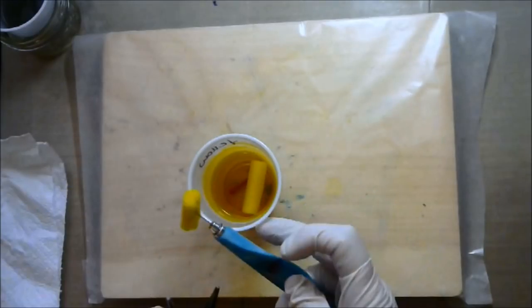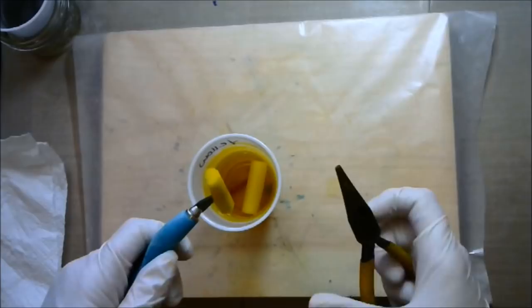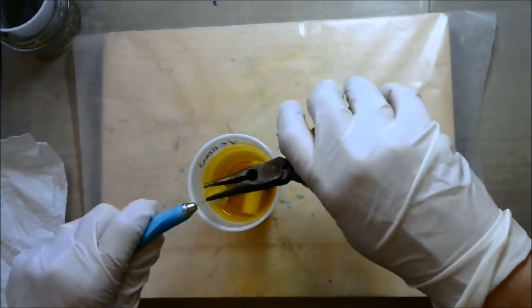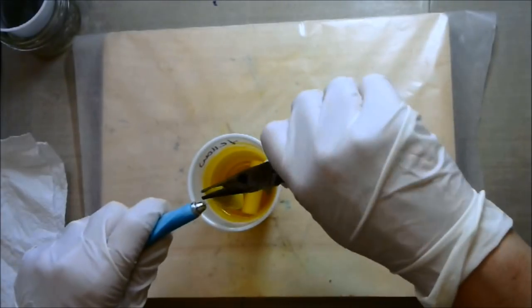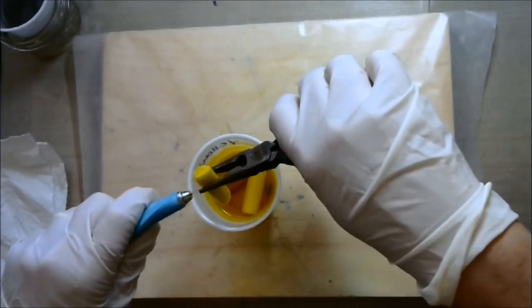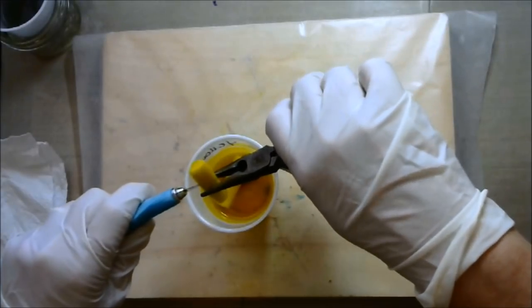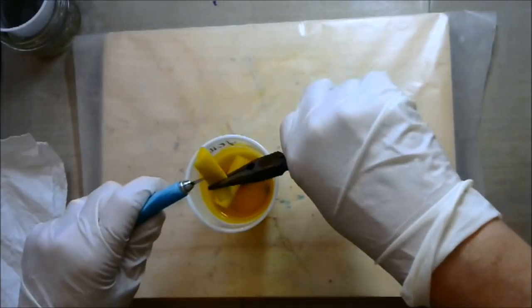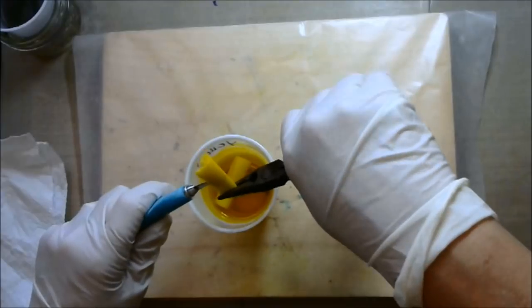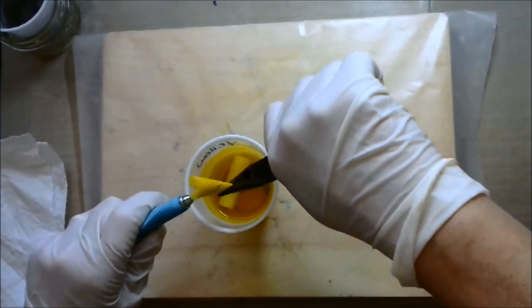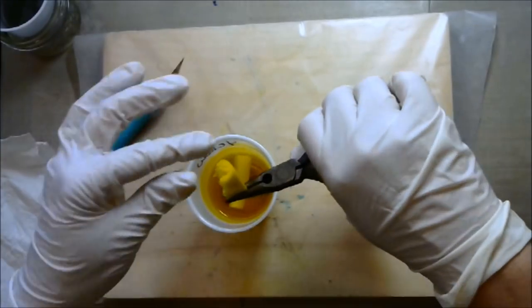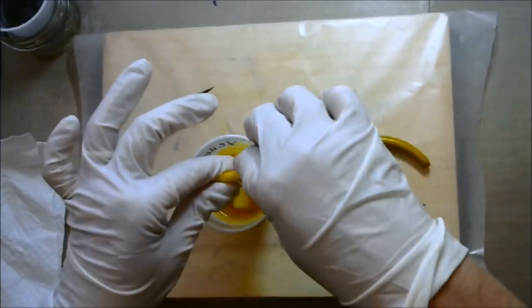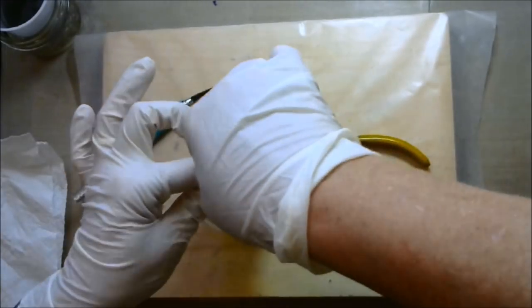I'm just going to poke my X-Acto knife through here to get a good hold on it. Let me switch hands here. And then I'm just going to squeeze, make sure I get all the color out of it. I cut this pretty deep, open it up pretty wide so it should be, not a whole lot of color left in there. You can see there's a lot of white in there.